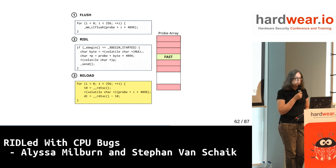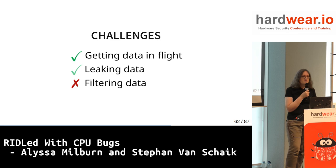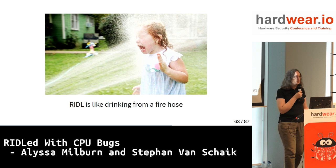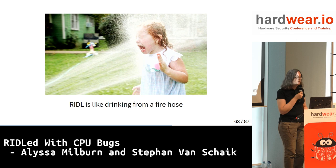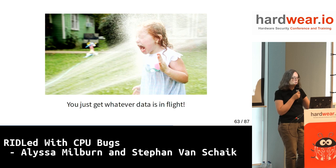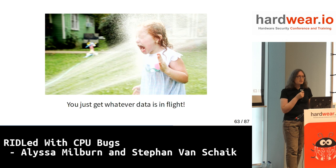Byte 3 — what is that in ASCII? The problem is Riddle is like drinking from a fire hose. You get everything going through these internal buffers — line fill buffers, load ports, store buffers — absolutely everything. By the time we've run this whole loop, huge amounts of other data have gone through these buffers. But the great thing is: as long as we can do it repeatedly — like running the passwd utility in a loop — all that data will come past at some point. The question is how do we get the right data? If we get 0xFF, that's not a valid ASCII character and not what we're expecting.